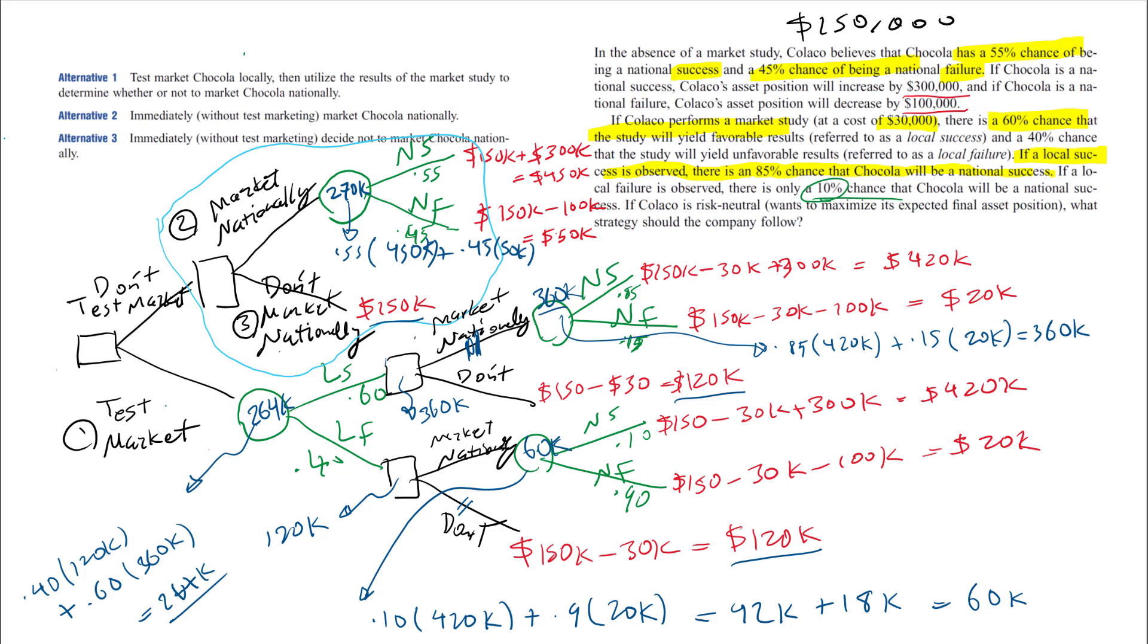The node before that is a decision fork, so I have to choose between these two values: 270 and 150. This one is larger, I'm going to mark that, so this will be 270.